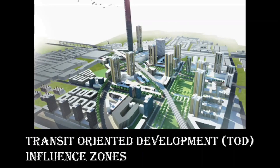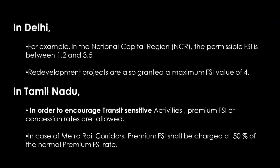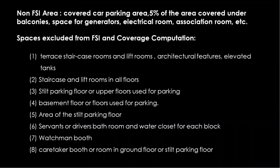In Transit Oriented Development areas, additional FSI is allowed in corridors to encourage transit-sensitive activities. In Delhi's National Capital Region (NCR), the permissible FSI is between 1.2 and 3.5 as per the Delhi Master Plan 2021. It encourages higher FSI and height within 500 meters on both sides from the central line of the MRTS major transport corridor, earmarked as the influence zone. Redevelopment projects are also granted a maximum FSI value of 4. In Tamil Nadu, to encourage transit-sensitive activities and allow densification near any mass rapid transit system, the government may prescribe regulations including premium FSI at concession rates. For metro rail corridors, properties within 500 meters from the center line are charged premium FSI at 50% of the normal premium FSI rate.